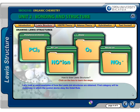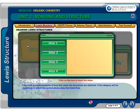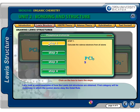Let's look at some examples of how Lewis dot structures are obtained. The first category involves molecules in which the central atom obeys the octet rule. In this example, the central atom is phosphorus surrounded by three chlorine atoms. Step 1: Calculate the total valence electrons from all atoms — 5 from phosphorus (Group 15) plus 21 from 3 chlorine atoms (Group 17, with 7 valence electrons each), giving a total of 26 electrons.